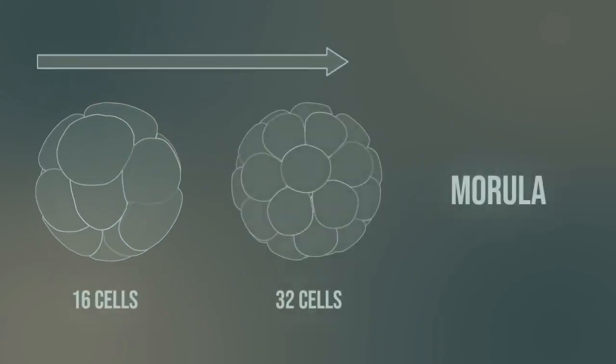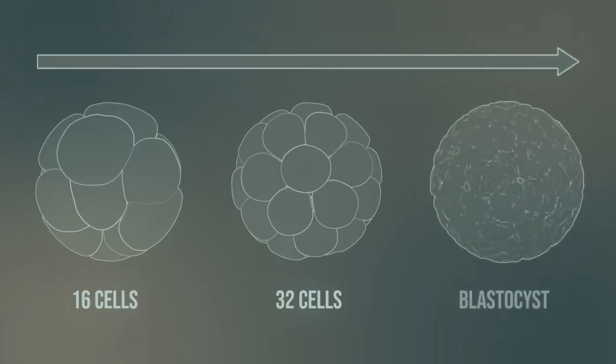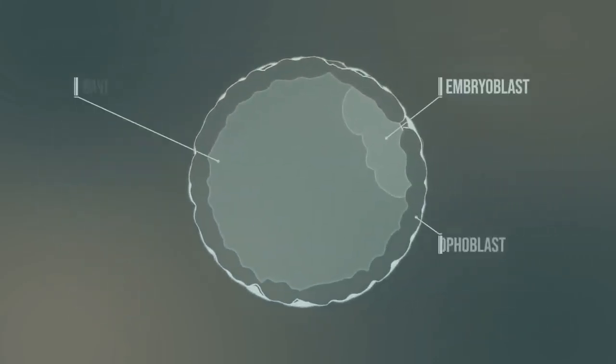After each cell division, whilst the number of cells increases, the size of each cell diminishes. Finally, the blastocyst is formed. The blastocyst consists of a fluid-filled cavity, the cells of the embryoblast and the trophoblast. The embryoblast is the initial structure of the new human being, whereas the trophoblast is the origin of placenta and membranes.